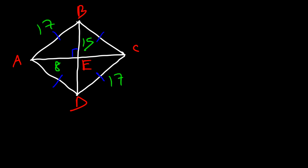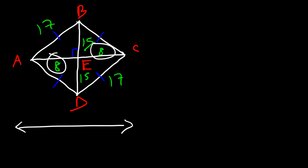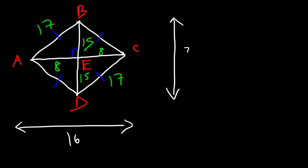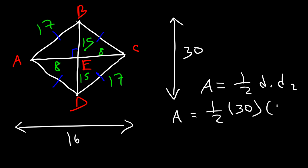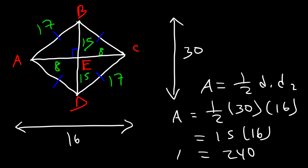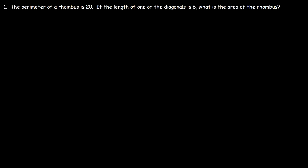Now we can calculate the area. Since BE is 15, ED is also 15, and since AE is 8, EC is also 8. So diagonal AC is 8 plus 8, or 16 units long, and diagonal BD is 15 plus 15, or 30 units long. The area is one-half times D1 times D2: one-half times 30 times 16. Half of 30 is 15, and 15 times 16 is 240 square units.